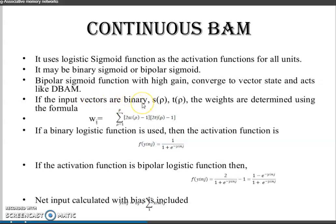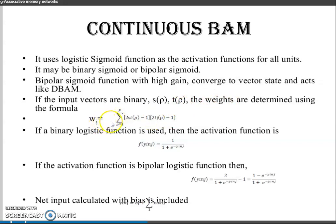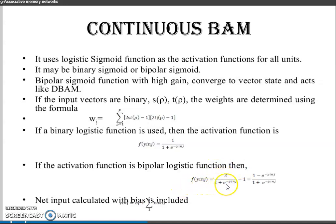Binary input vectors are used, where s of p and t of p for p equal to 1 to P. The weights are determined by the formula: w_ij equals sigma p equal to 1 to P of (2s_i(p) minus 1) times (2t_j(p) minus 1). The binary logistic activation function is f of y_inj equal to 1 divided by (1 plus e raised to minus y_inj). The bipolar version is f of y_inj equal to (1 minus e raised to y_inj) divided by (1 plus e raised to minus y_inj).